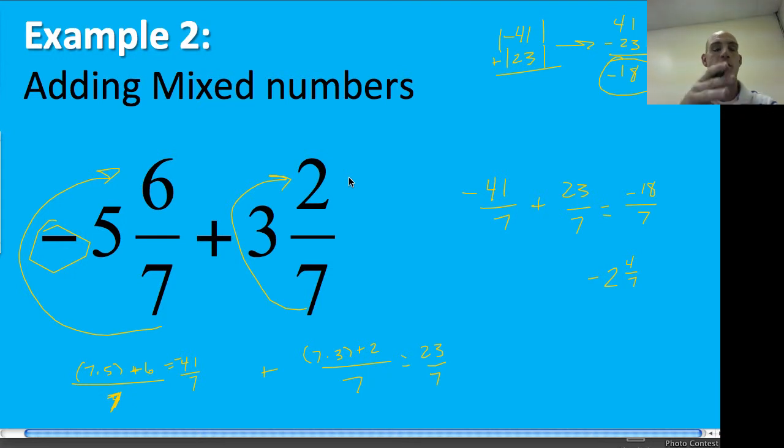It's important to remember that even though these were negatives, all of this is negative. Not just the five part, not just the six sevenths part. All of it's negative and so that's why I got the negative 41 over 7 and not something that was a mix between a negative and a positive.